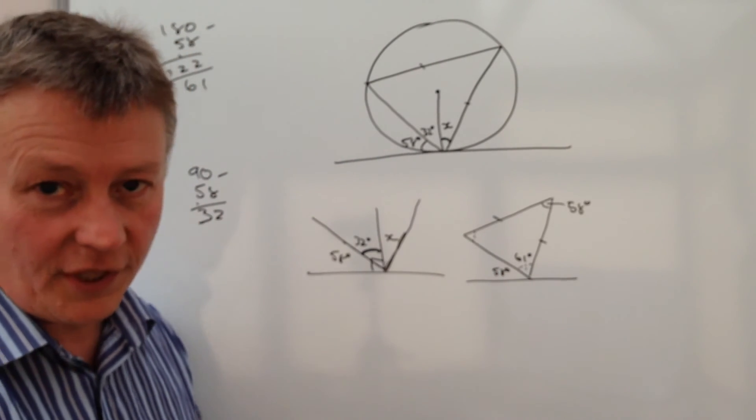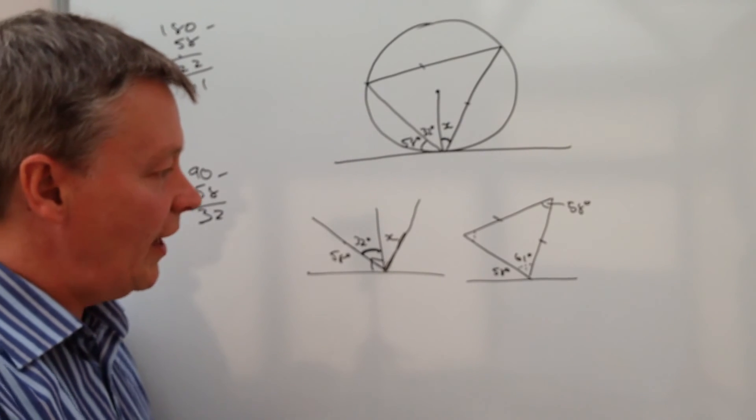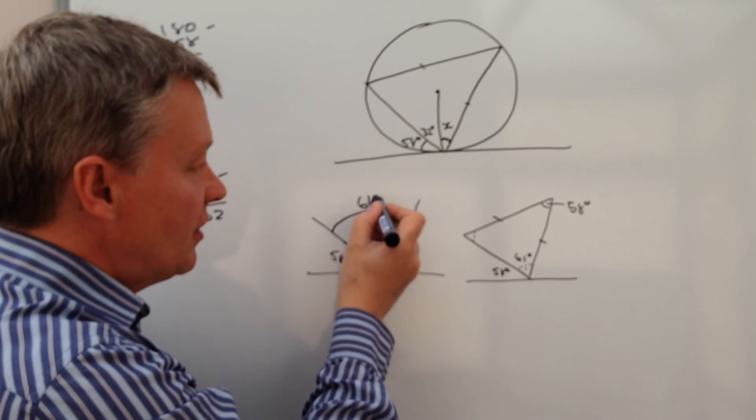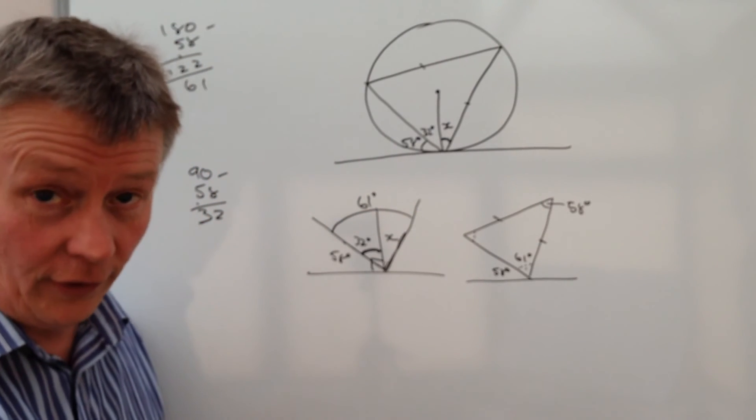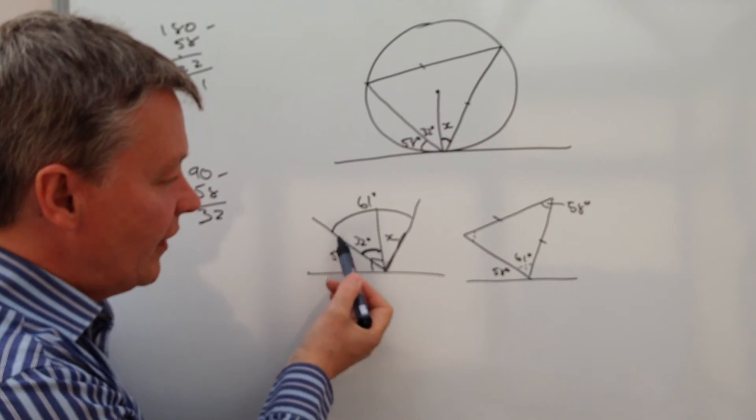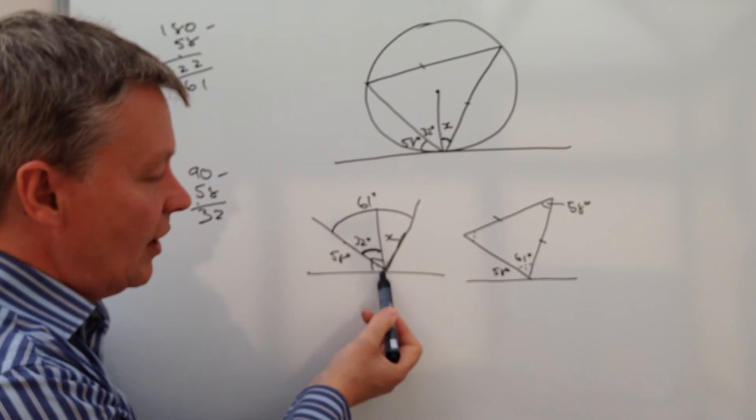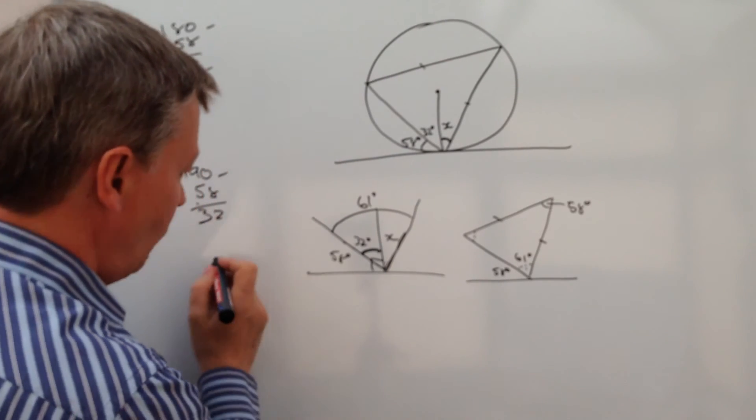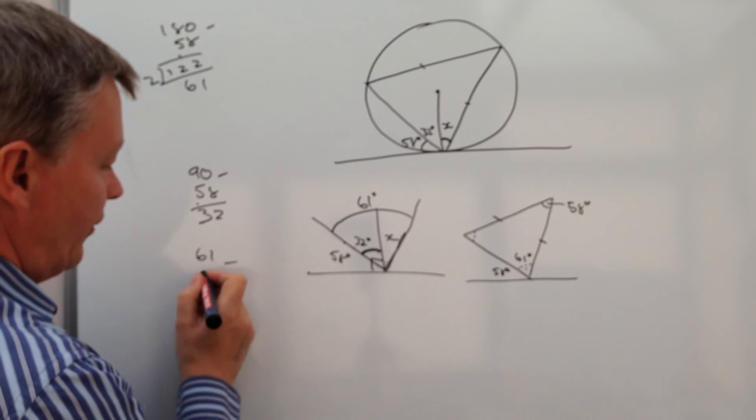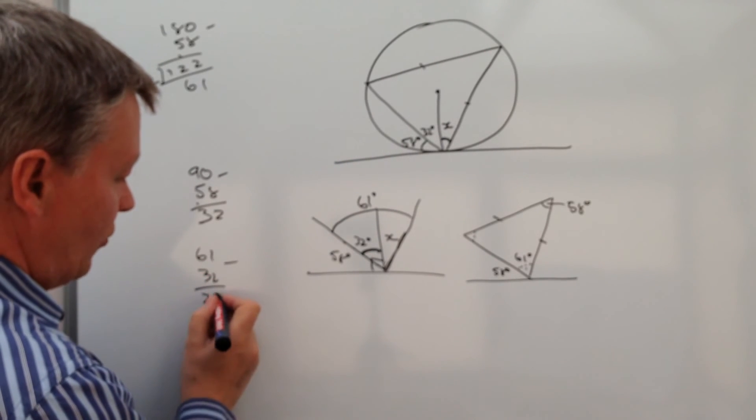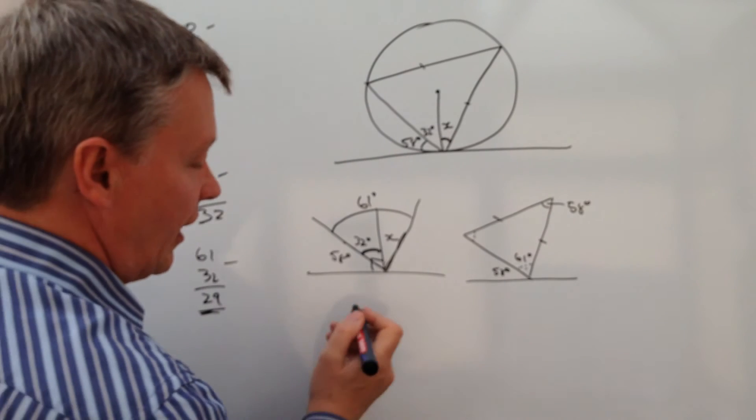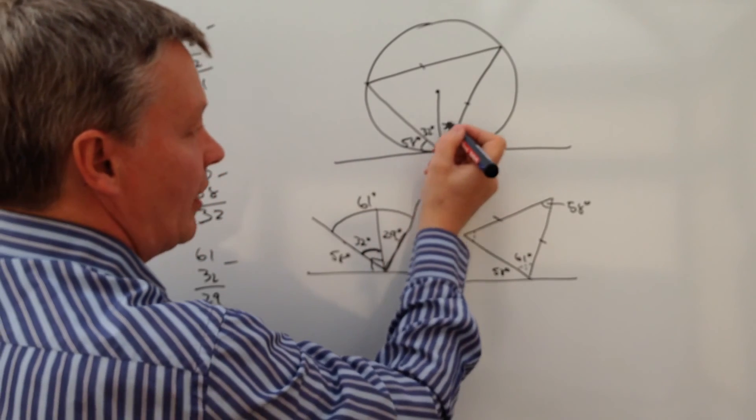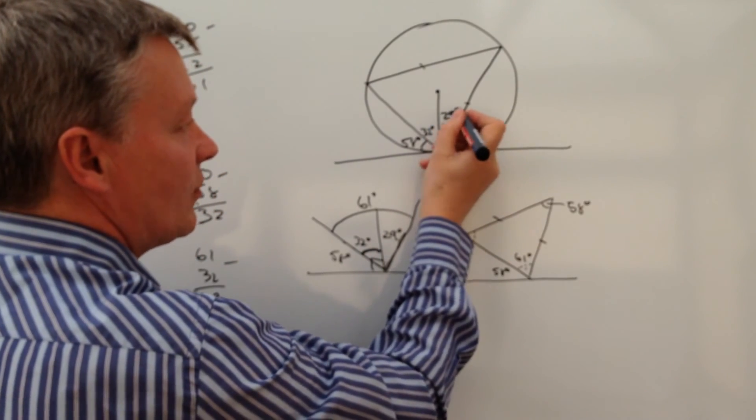Excellent. So now we should be in a position to work out the value of X, because we know the overall angle is 61 degrees. Well, if we know the overall angle is 61 and part of it is 32, which is this piece here, then the bit that's left is going to be X. So 61 take away 32 is going to be 29. So actually, this value of X is 29 degrees, which means that answers the question, this is 29 degrees.